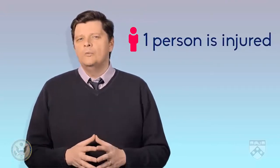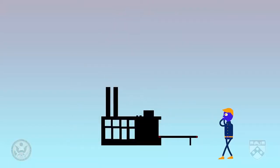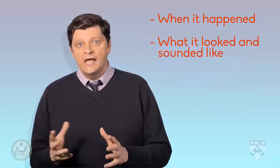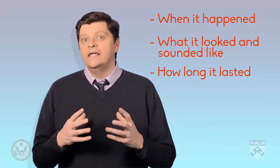Eyewitnesses are the people who actually see something happen. In this example, an eyewitness would need to actually see the explosion in the factory — maybe they live near to the factory or they were walking past. As a source, this person provides the physical details of the explosion: when it happened, what it looked and sounded like, and how long it lasted.